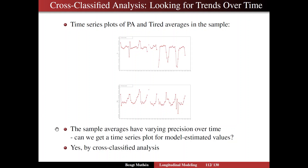The sample averages, however, have varying precision over time, and the number of people for each time point varies. So the question is: can we get a time series plot of model-estimated values that better use the information in the data and take into account missing data as well? And the answer is yes, by cross-classified analysis.